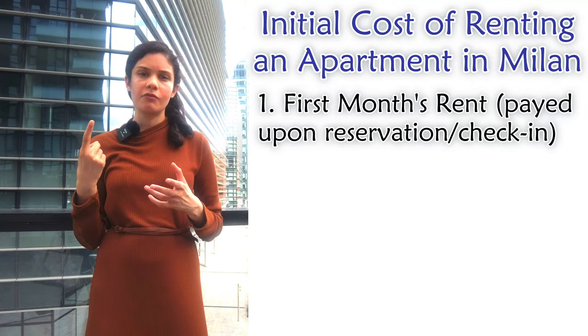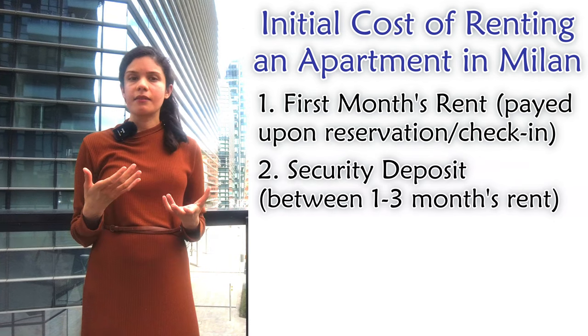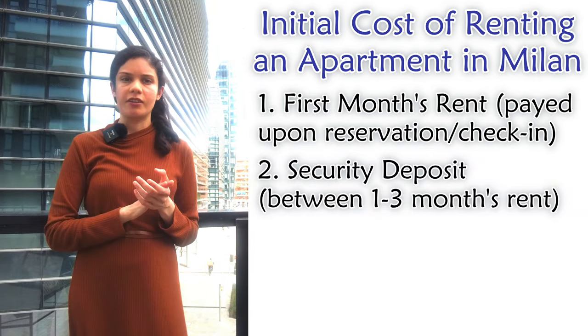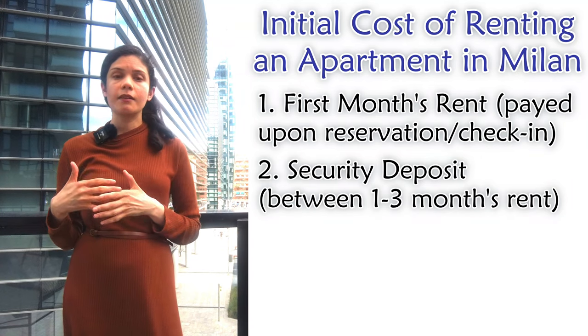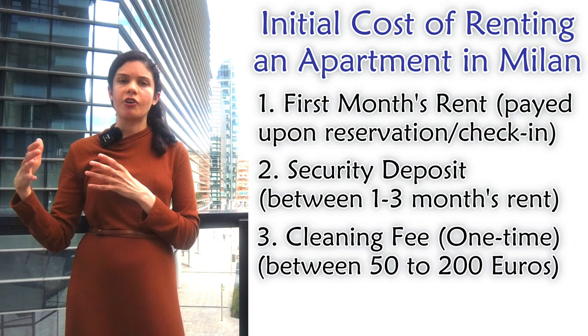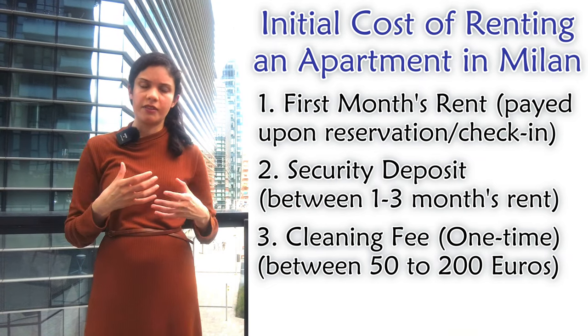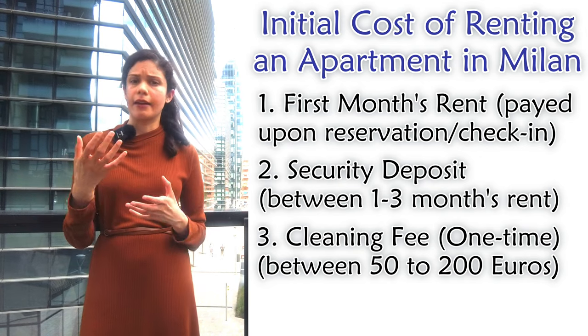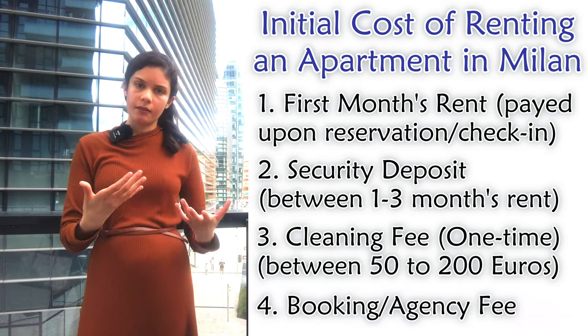Here is an estimate of the initial expenditure you're likely to incur when booking or moving into an apartment. There are four components. The first is the first month's rent, which is sometimes payable upon reservation and sometimes upon check-in. The second is the deposit — in short-term rentals this is low, usually equivalent to one month's rent. The third component could be a one-time payment for initial and final cleaning, and possibly for items like bed linen, towels, drapes, kitchenware, and utensils.